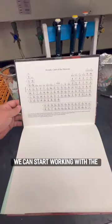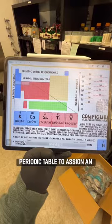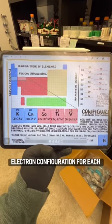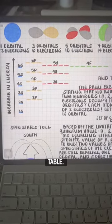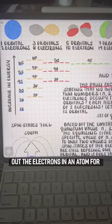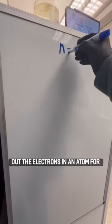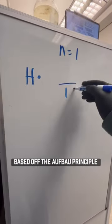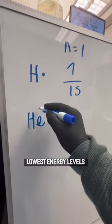Moving on from the Aufbau principle, now we can start working with the periodic table to assign an electron configuration for each element on the table. This is the process of mapping out the electrons in an atom for a specific element, based on the Aufbau principle that they will fill in the lowest energy levels first.